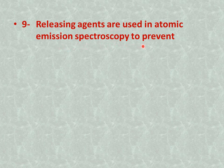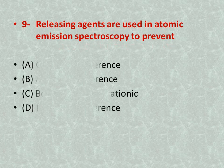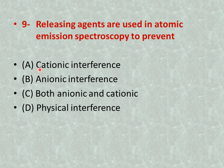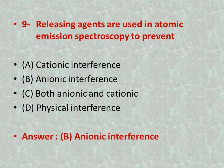Question number nine: releasing agents are used in atomic emission spectroscopy to prevent — options: A is cationic interferences, B is anionic interferences, C is both anionic and cationic interferences, D is physical interferences. The right answer is B — releasing agents are used to prevent anionic interferences.